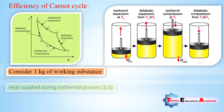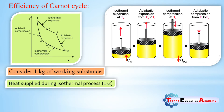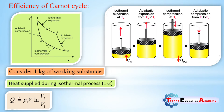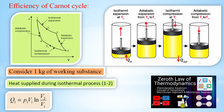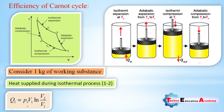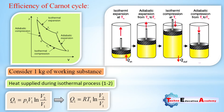Now we derive the equation of efficiency for the Carnot cycle, considering 1 kg of working substance. For the isothermal process 1 to 2, Q1 equals P1V1 ln(V2/V1). We have already derived the equation of heat transfer and work done for isothermal processes in the thermodynamics non-flow processes playlist. Since PV equals mRT for a gas, and m equals 1 kg, Q1 equals RT1 ln(V2/V1).